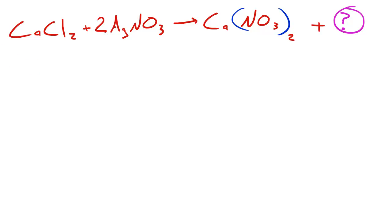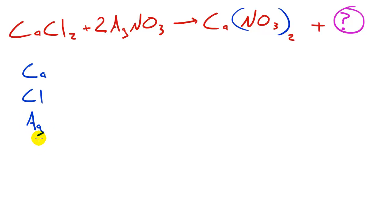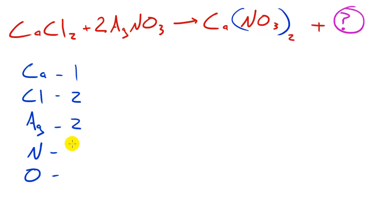Let me talk you guys through how to solve this, and you can see if the answer you got matches mine. I'm going to balance this equation like before — writing all of my chemicals: calcium, chlorine, silver, nitrogen, and oxygen. Now let's count these up for the left-hand side. I see one calcium, two chlorine atoms, two silver, two nitrogen, and six oxygen — because there are three oxygens in NO₃ and we have two of them.